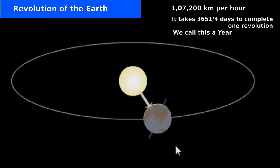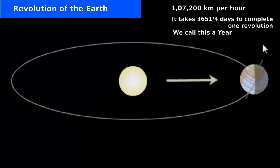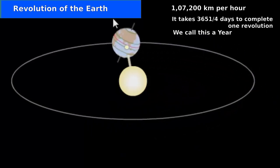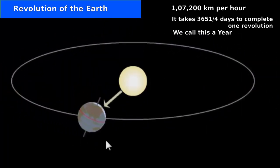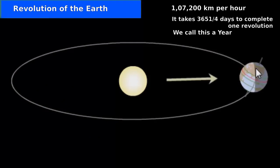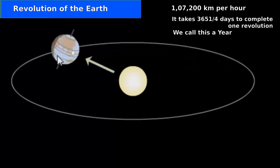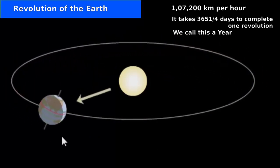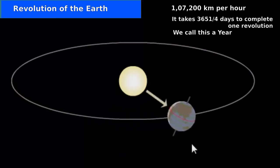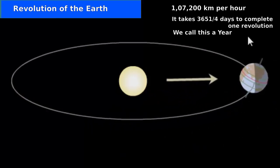Earth travels around the Sun at a speed of 17,200 km per hour. At this speed, it takes 365 and 1/4 days to complete one revolution. We call this a year.